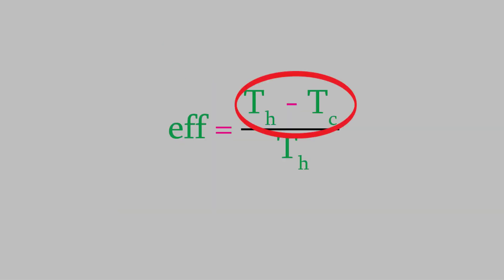The numerator is just the difference between the temperatures of the hot and cold reservoirs. Note that all the temperatures in this equation must be in Kelvins.